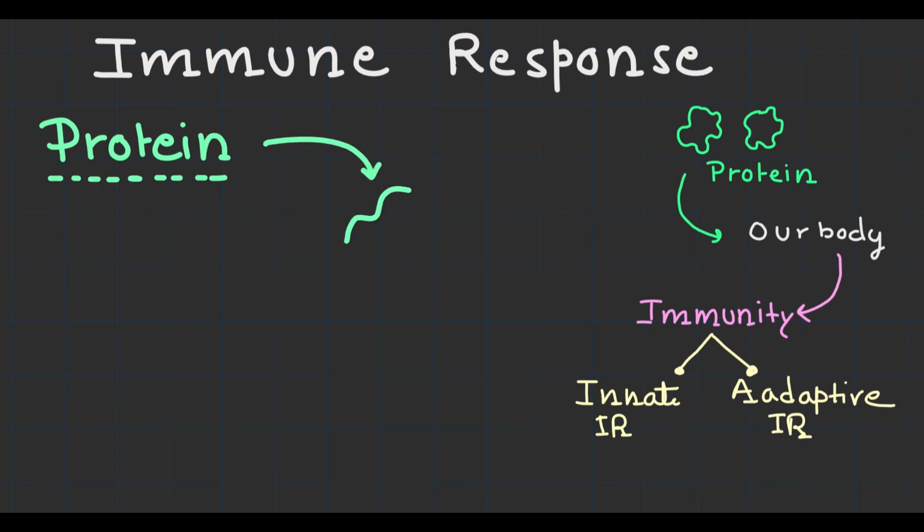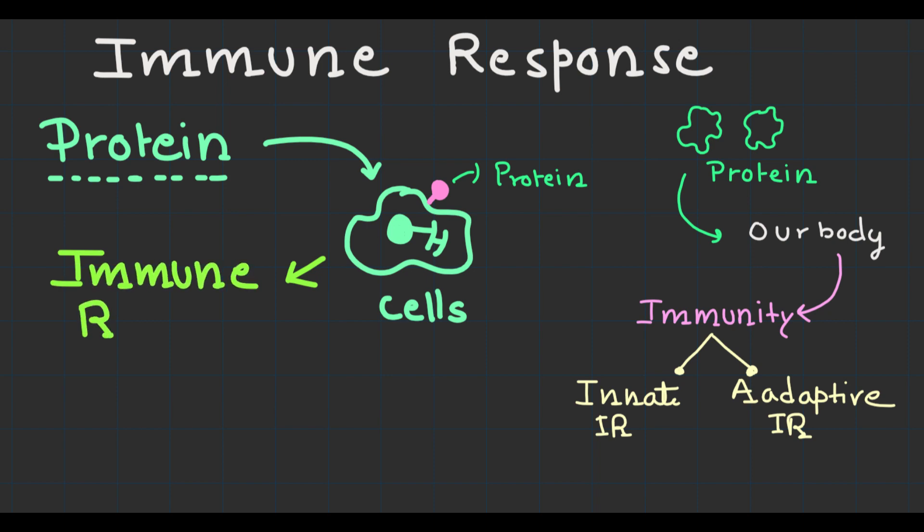The next step is immune response activation. The pathogen protein encoded by the synthetic vaccine is displayed on the surface of our cells. This presentation triggers our immune system to recognize the protein as foreign, leading to the activation of both the innate and the adaptive immune responses.